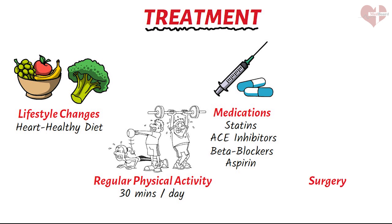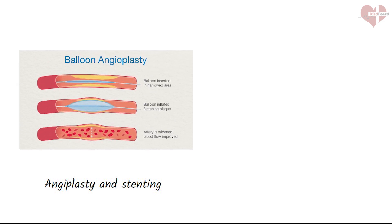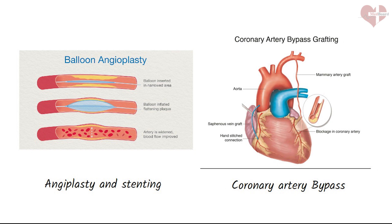In some cases, surgical procedures may be necessary to treat coronary artery disease. These may include angioplasty and stenting, which involve widening a narrowed artery and placing a small mesh tube called a stent to keep it open. In more severe cases, coronary artery bypass surgery may be necessary to reroute blood flow around a blocked artery. The best way to treat coronary artery disease is to prevent it from developing in the first place. By adopting a heart-healthy lifestyle, managing your risk factors, and getting regular checkups, you can reduce your risk and improve your overall heart health.